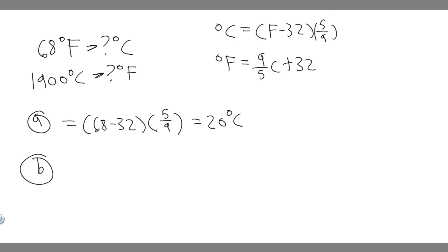So now let's do part B. B is going to be 1,900 degrees Celsius into Fahrenheit. So we're going to use this formula right here. You're going to do 9 over 5 times the Celsius value, which is 1,900, and then add 32.